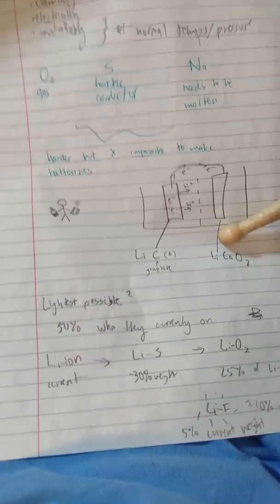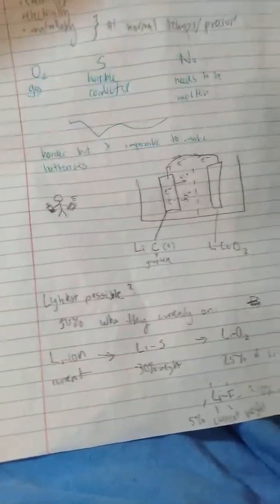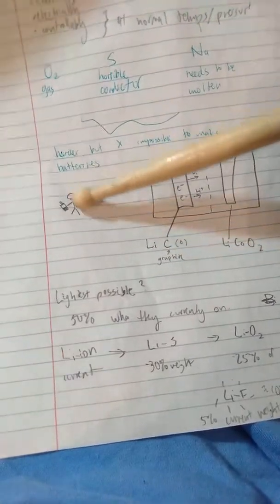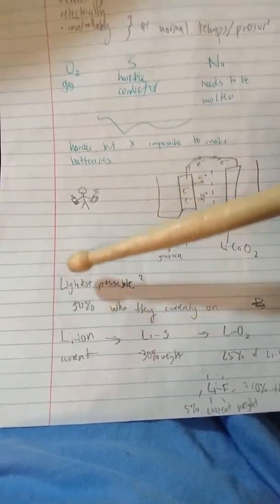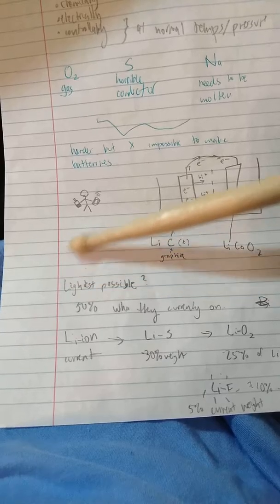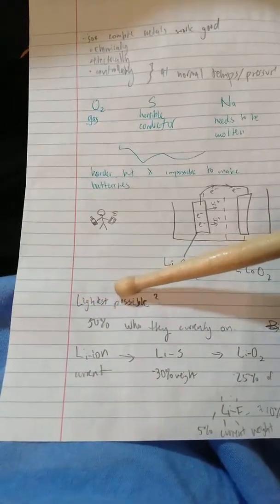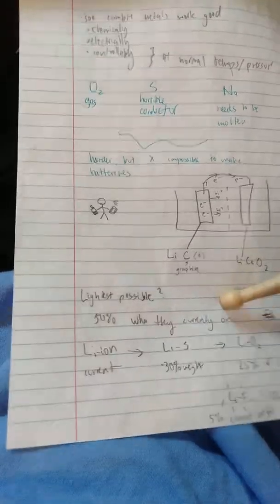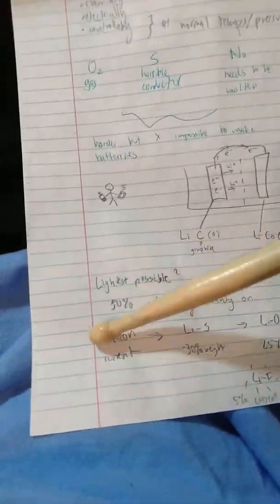Currently, lithium-ion batteries are usually made of lithium graphite that gives away electrons to lithium cobalt oxide. This is what's used currently in a lot of smartphones and little gadgets. What is the lightest possible combination? It can be 50% of what they currently are right now.